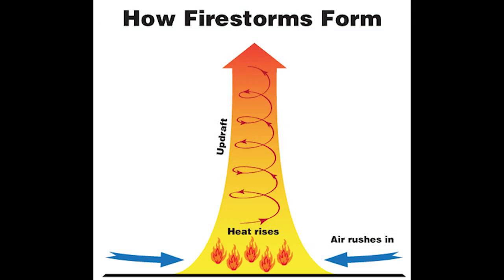A firestorm is a large fire that attains such intensity that it creates and sustains its own wind system, or storm-force winds. It can create its own weather, sucking in oxygen with powerful drafts that fuel the hungry fire. When a firestorm blows up in a forest like the Peshtigo fire did, it becomes nature's nuclear explosion.